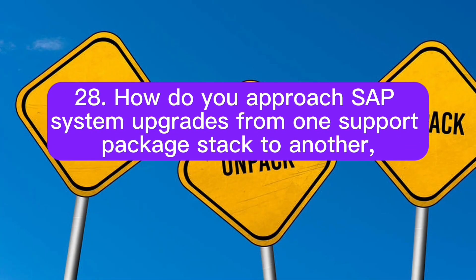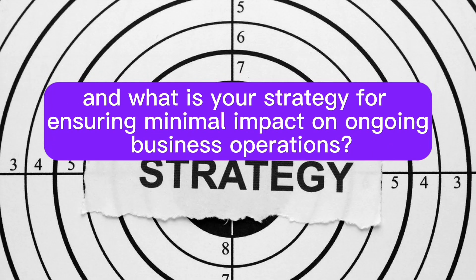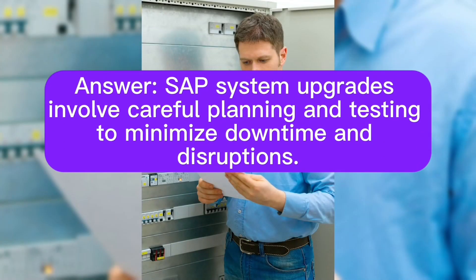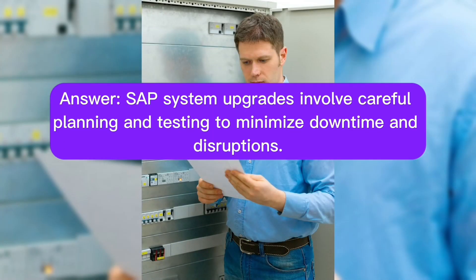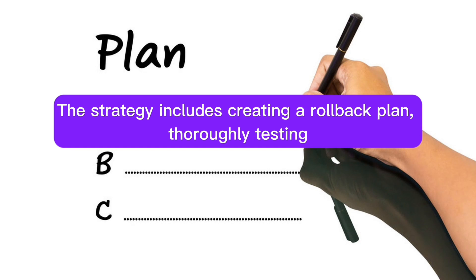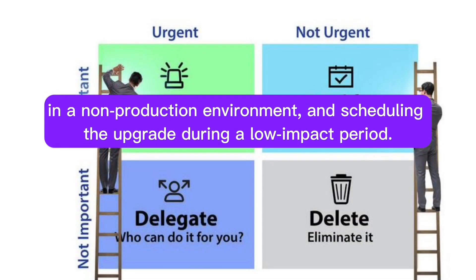Question 28: How do you approach SAP system upgrades from one support package stack to another, and what is your strategy for ensuring minimal impact on ongoing business operations? Answer: SAP system upgrades involve careful planning and testing to minimize downtime and disruptions. The strategy includes creating a rollback plan, thoroughly testing in a non-production environment, and scheduling the upgrade during a low-impact period.